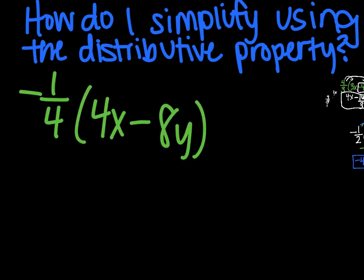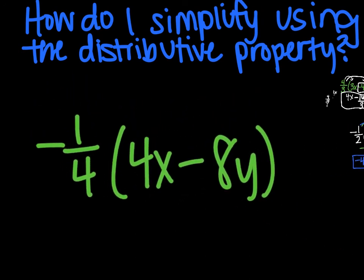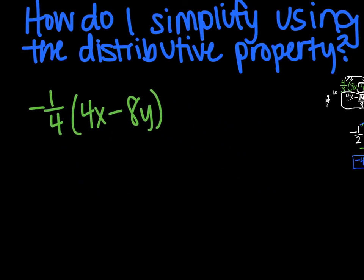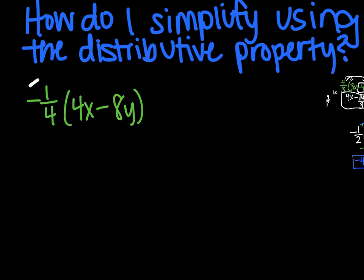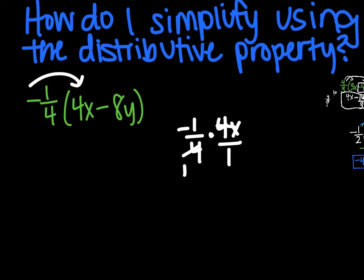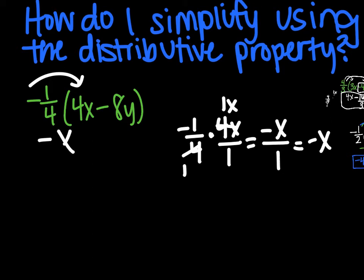Third problem: negative 1/4 times (4x − 8y). We're just going to feed the birds. First one — step off to the side: negative 1/4 times 4x over 1. Simplify before you multiply — divisible by 4. So we have negative 1 times 1x, which is negative x, over 1, which simplifies to just negative x.